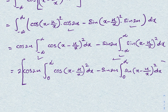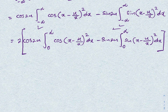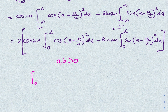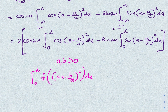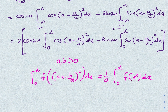Now we recall the Cauchy-Schlömilch transformation — I plan to prove this formula in a future video. When a, b > 0, the transformation states: the integral from zero to infinity of f[(ax − b/x)²] dx equals (1/a) times the integral from zero to infinity of f(x²) dx. We have exactly this type of integral.